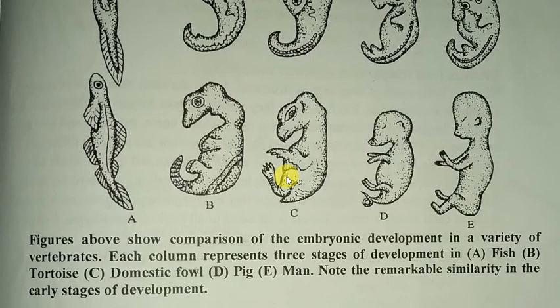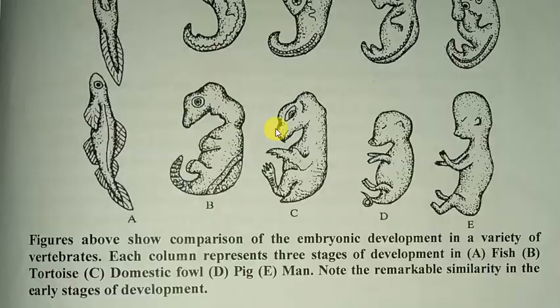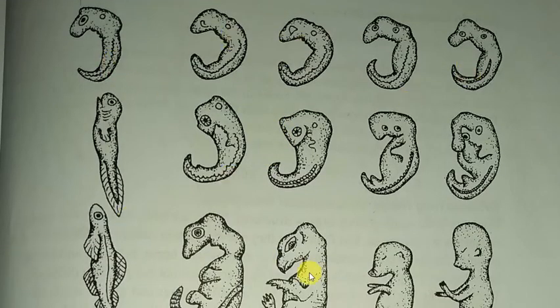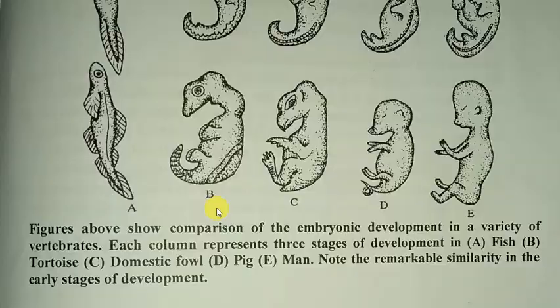The figure above shows a comparison of the embryonic development of a variety of vertebrates. Each column represents three stages of development. A is fish, B is tortoise, C is domestic fowl — that is, chicken, D is pig, and E is man. Note the remarkable similarity in the earlier stages of development. This similarity suggests that probably all of these organisms were from the same origin.